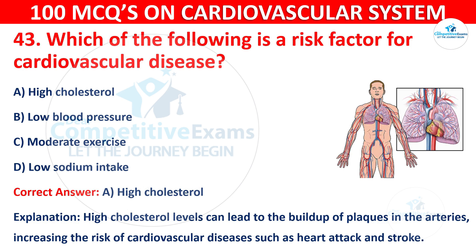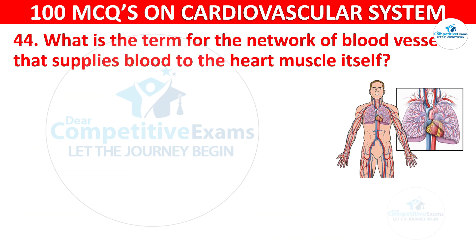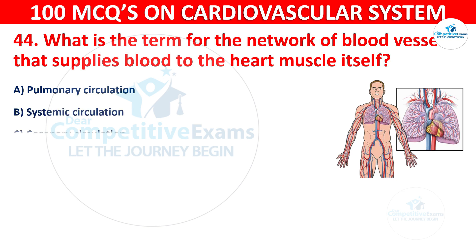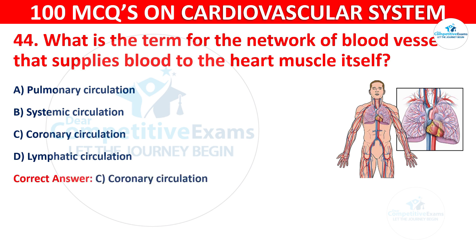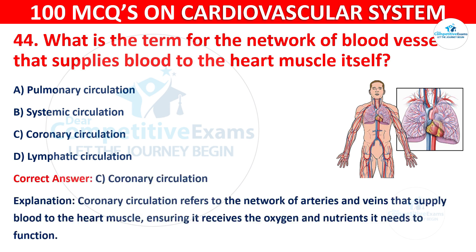Question 44: What is the term for the network of blood vessels that supplies blood to the heart muscle itself? Options are: Pulmonary circulation, Systemic circulation, Coronary circulation, or Lymphatic circulation. The correct answer is C, Coronary circulation. Coronary circulation refers to the network of arteries and veins that supply blood to the heart muscle, ensuring it receives the oxygen and nutrients it needs to function.